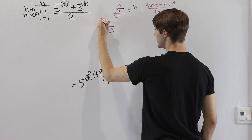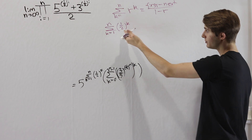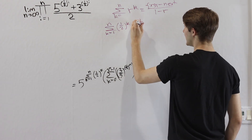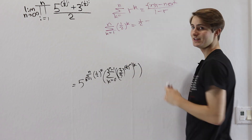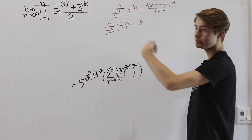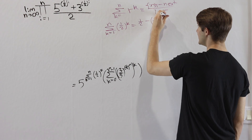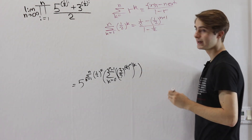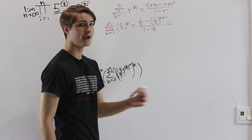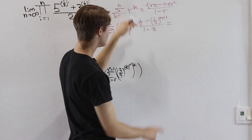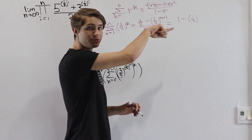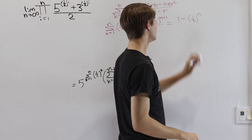For the sum from k equals 1 to n of (1/2)^k, r is 1/2. The first term is 1/2, and the next term outside is (1/2)^(n+1). Dividing by (1 − 1/2) = 1/2, we can cancel: this simplifies to 1 minus (1/2)^n.